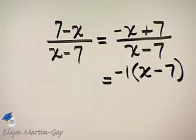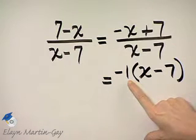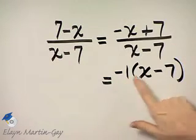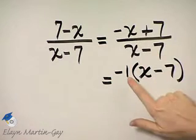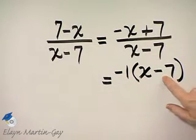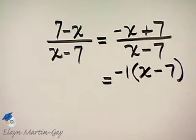Now, I have not changed the numerator. Notice by using the distributive property, negative 1 times x is negative x, and negative 1 times negative 7 is positive 7.